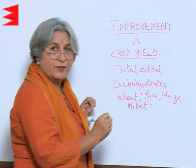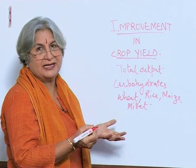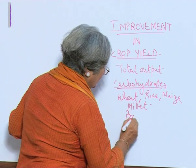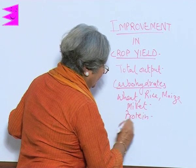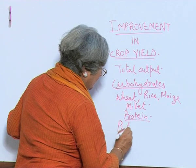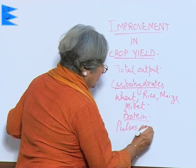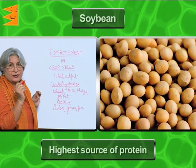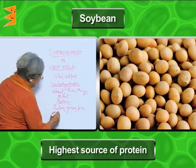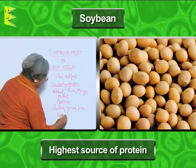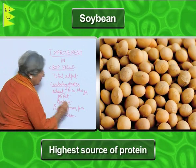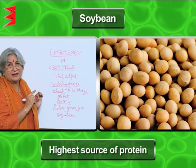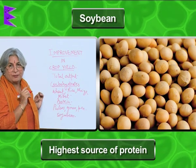And what about proteins? Obviously the pulses — gram, pea, and the highest source of protein is soya bean. It is not animals but soya bean which is the highest source of protein.